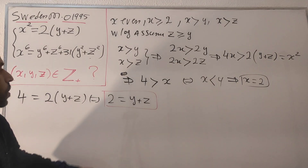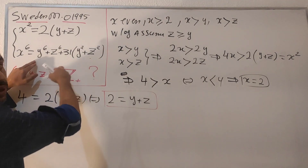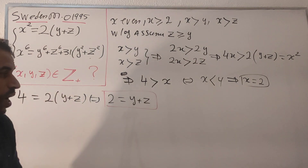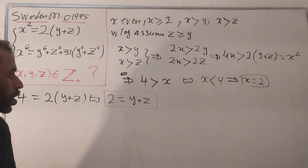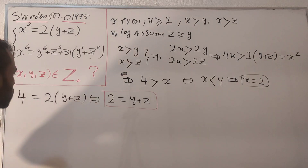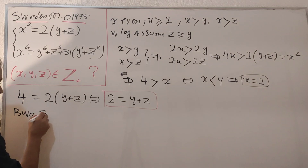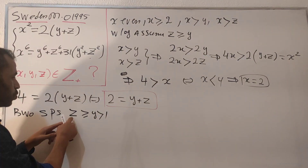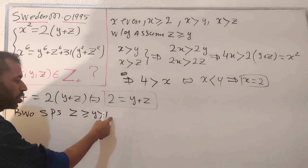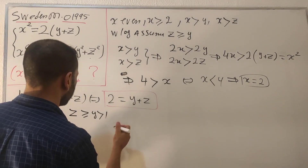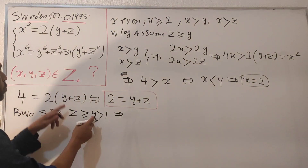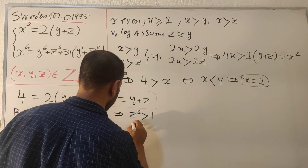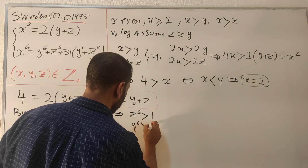Now we find y and z individually using contradiction. We don't need a large factorization — let's use a small trick. By contradiction, suppose y is strictly greater than 1. Since both z and y are strictly greater than 1, raising to the sixth power gives z to the 6 strictly greater than 1 and y to the 6 strictly greater than 1.